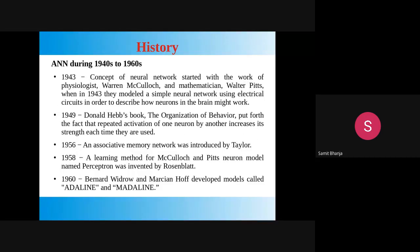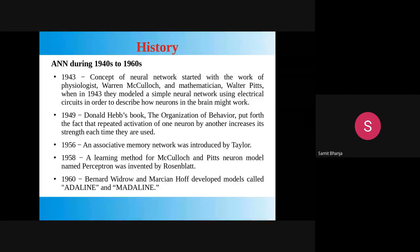The development of artificial neural network has come through different eras, which I am dividing into three phases: 1940 to 1960, 1960 to 1980, and 1982 till present. In 1943, psychologist Warren McCulloch and mathematician Walter Pitts developed a new artificial neural network model. In 1956, Taylor introduced an associative memory network. In 1958, the perceptron learning algorithm was developed by Rosenblatt for McCulloch-Pitts neurons. In 1960, the Adaline and Madaline networks were developed by Bernard Widrow and Marcian Hoff.